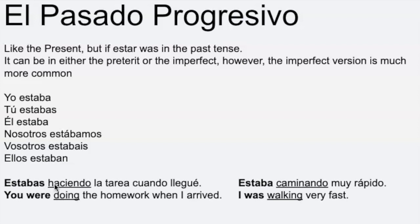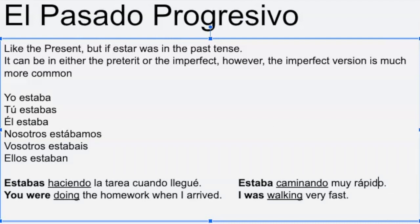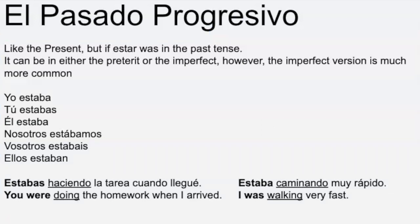Here's an example: Estabas haciendo la tarea cuando llegué — 'You were doing the homework when I arrived.' So basically while you were doing the homework, that action was ongoing when I arrived. This tense is used to say while something was happening, this other thing was happening — an ongoing action in the past. Another example: Estaba caminando muy rápido — 'I was walking very fast.' And you can add: y de repente un oso vino — 'and suddenly a bear came.'